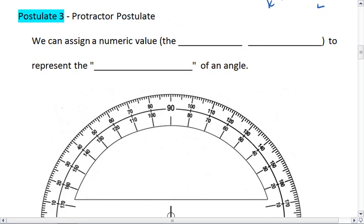This brings us to postulate 3, the protractor postulate. This tells us that we can assign a numeric value, which is the angle measure, to represent the openness of an angle.